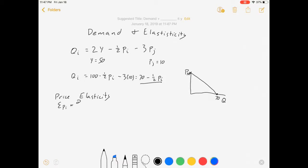Let's say that the price of good I is 20. Let's see. So the quantity demanded with Y 50, PI 20, PJ 10 is 70 minus one half times 20 is 60. So I'm interested in calculating my price elasticity, my cross price elasticity, and my income elasticity at that point. So let's do it.